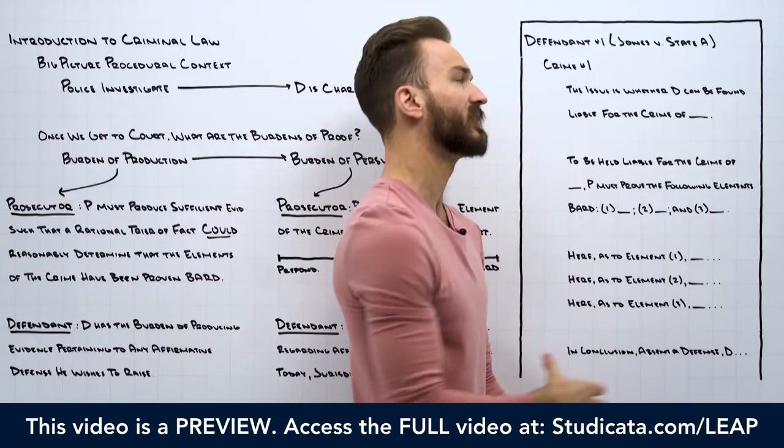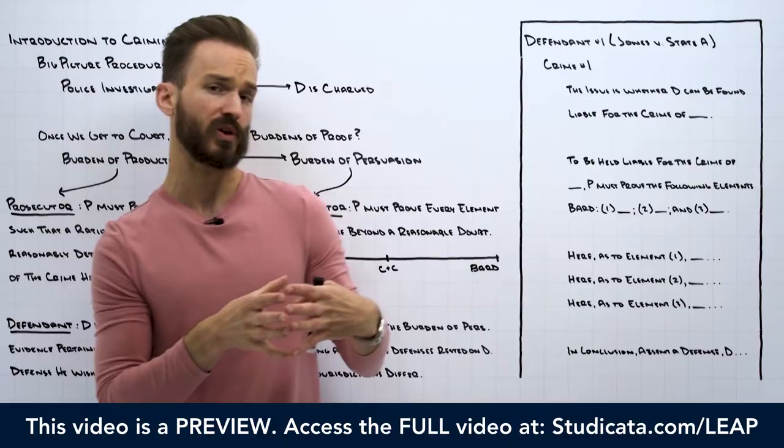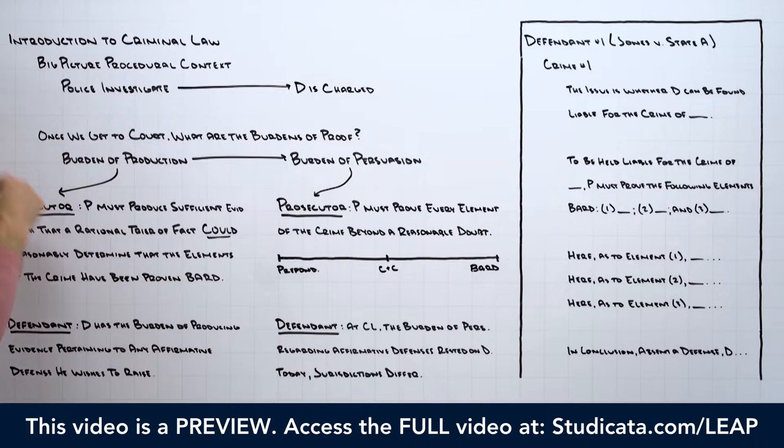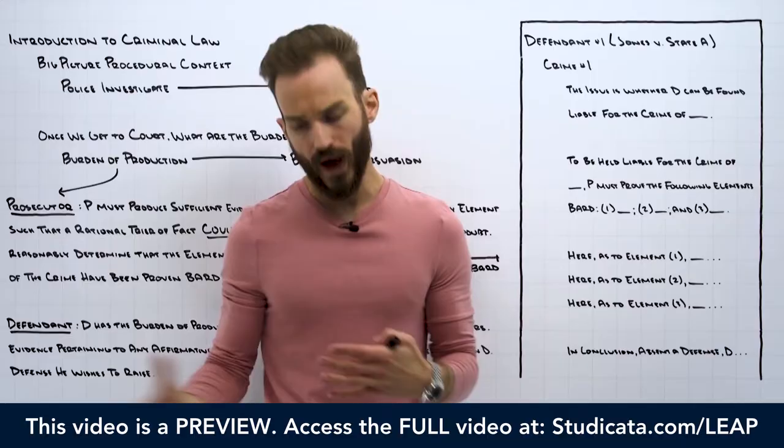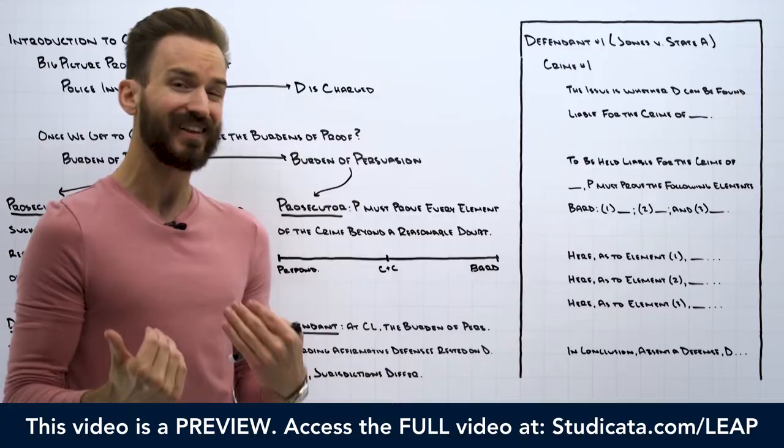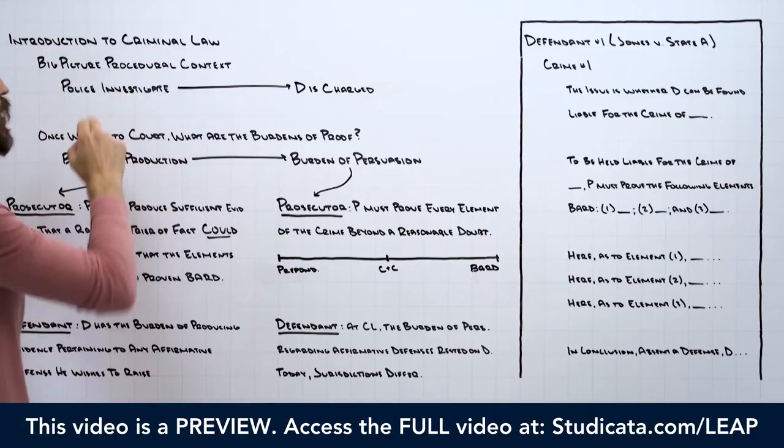We'll talk about how to format and structure essays, because criminal law is unique in that you can have certain formulaic or systematic approaches by the nature of what's being tested. We'll go over at the end of this lesson how to structure essays and how to approach an issue spot from a big picture. But before we get into that, we need to go over some basic procedural stuff — the big picture procedural context when thinking about criminal law. Essentially, how does a person actually get convicted of a crime? How do you go from walking down the street to being convicted in court?